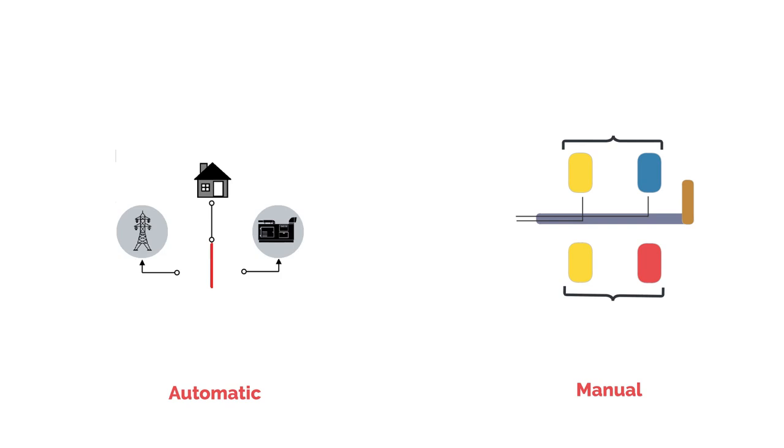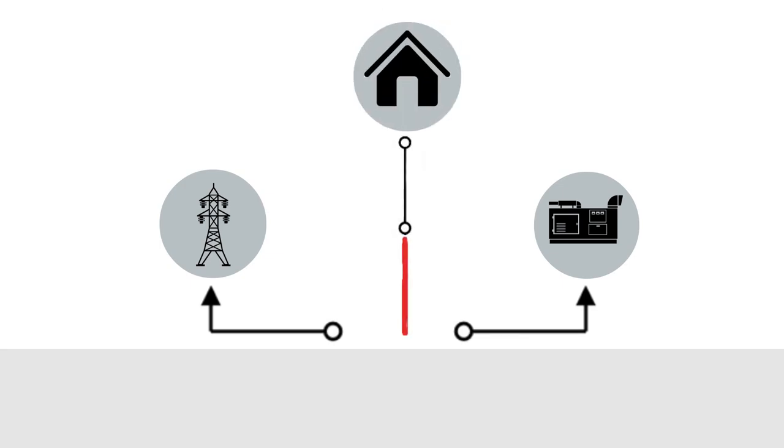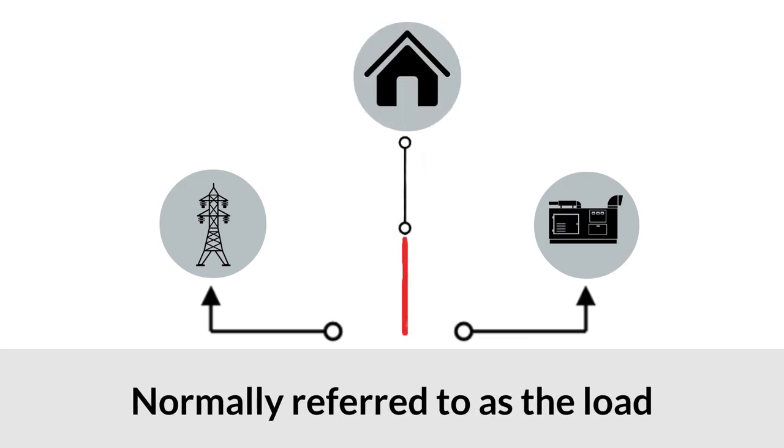Both manual and automatic transfer switches have three main electrical connections: one to the generator, one to the mains, and the last one to the house or business that needs power, normally referred to as the load.